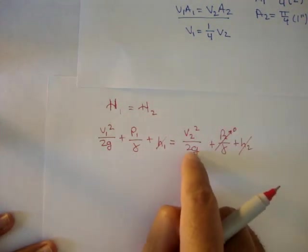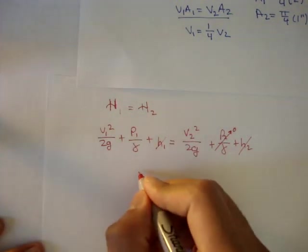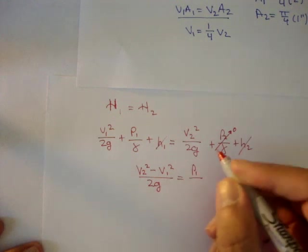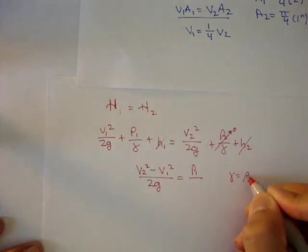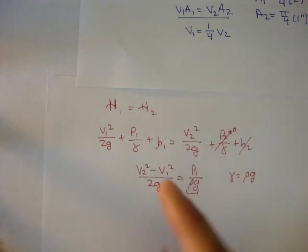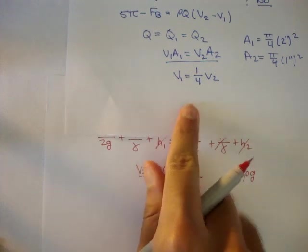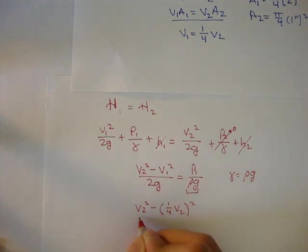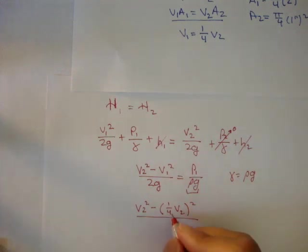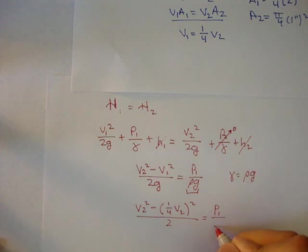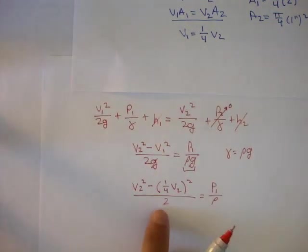So if we rearrange this entire equation, we'll get v2 squared minus v1 squared over 2g is equal to p1 over gamma. And gamma is rho g. So we can say that's gamma. And if we plug in v1, which up here we got v1 is equal to one quarter of that of v2, we can say v2 squared minus one quarter of v2 squared squared, or v2 squared over 16, over 2 is equal to the pressure at 1 over rho. And you're saying, oh, Sammy, where did the gravities go? Well, the gravities cancel out here. So that's why we just have 2 and rho.